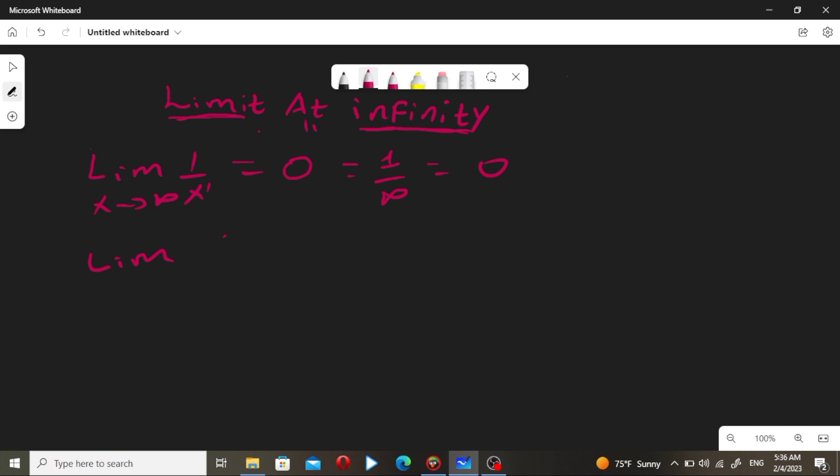Next: x square plus 1 over x minus 1 as x approaches infinity. To find the significant power, we ignore the constants. So x square over x, which means x.